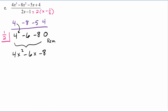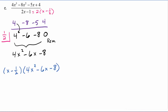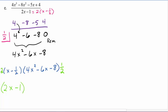We take 1/2 times 4, which is 2; minus 8 gives negative 6. Half of negative 6 is negative 3; minus 5 gives negative 8. Half of negative 8 is negative 4; plus 4 gives 0. This tells us our depressed polynomial is 4x squared minus 6x minus 8, and because the remainder is 0, x minus 1/2 is a factor. But remember, we were dividing by 2x minus 1. The factored form is x minus 1/2 times (4x squared minus 6x minus 8). We multiply the first factor by 2 and the second factor by 1/2 — which is multiplying by 1 overall. This gives us 2x minus 1 times (2x squared minus 3x minus 4), so 2x squared minus 3x minus 4 is our actual quotient.